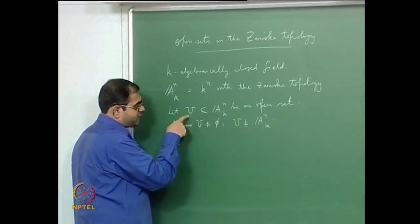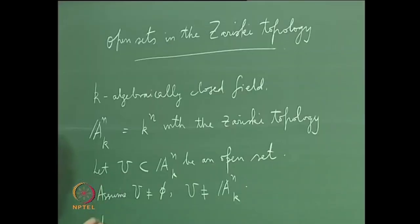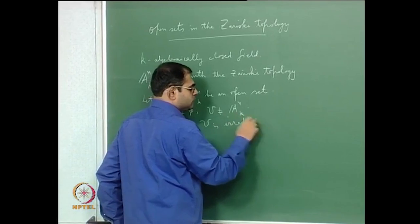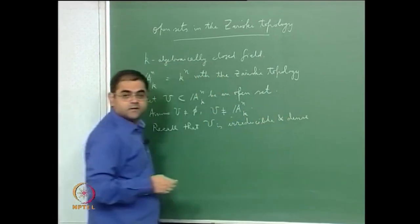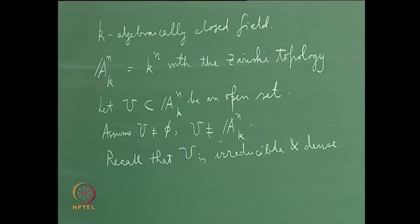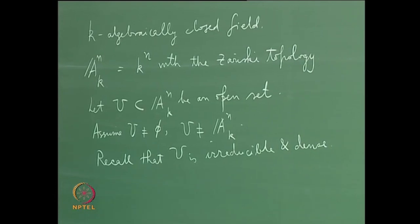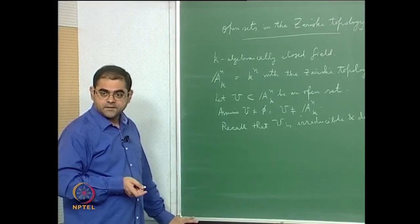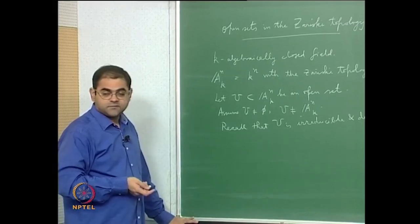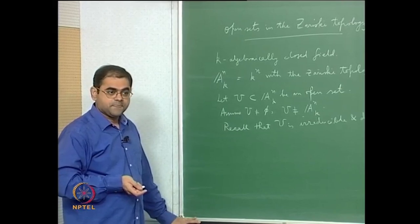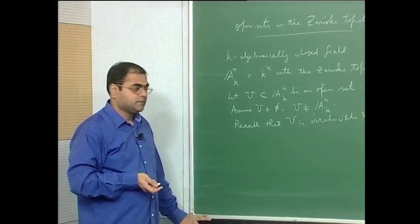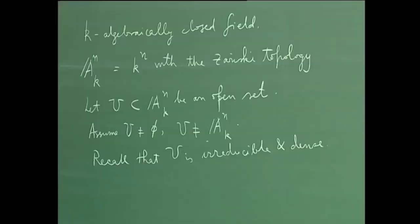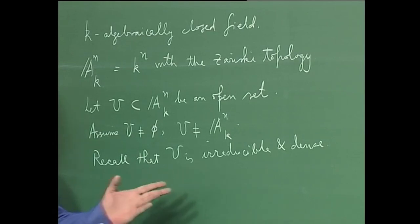Recall that U is irreducible and dense. This is something very special and does not happen in the usual topology. For example, if you take the topology of the real line given by open intervals, or the topology of the real plane given by open discs, a non-empty open set need not be irreducible and need not be dense. But this is very special for the Zariski topology.